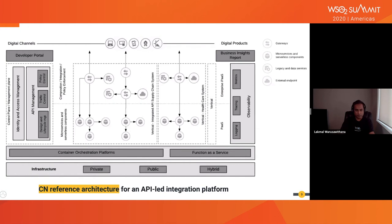It is required to integrate multiple microservices and expose them as business APIs. These APIs should be secured, managed, observed, and monetized. This is where API gateways come into the picture. API gateways can do composition, edge integration, and apply policy enforcement like security and rate limiting, and also capture important stats and metrics to generate meaningful business insights.